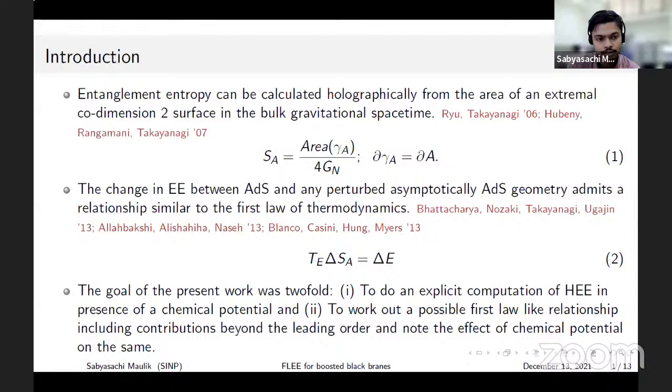By now it is well established in the AdS/CFT community that the entanglement entropy associated with any sub-region in the boundary conformal field theory is related to the area of an extremal co-dimension 2 homologous surface in the bulk gravitational spacetime. In a series of works it was shown that the perturbative change in entanglement entropy between empty AdS and any perturbed asymptotically AdS geometry admits a relationship similar to the first law of thermodynamics.